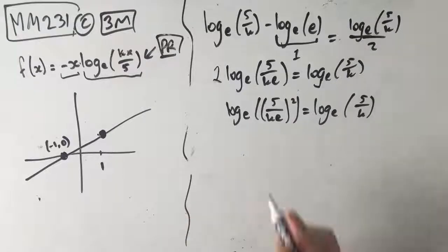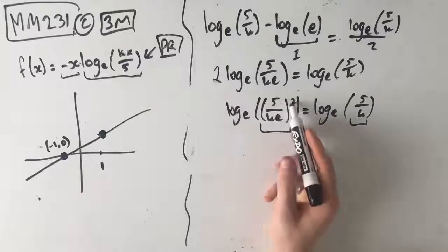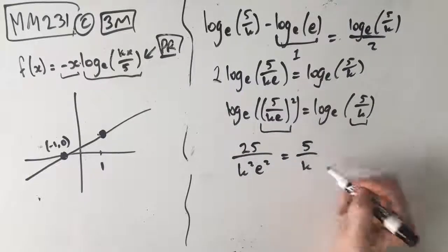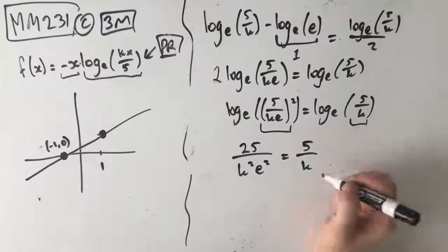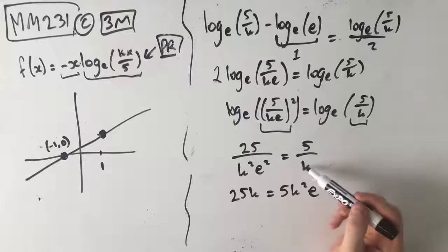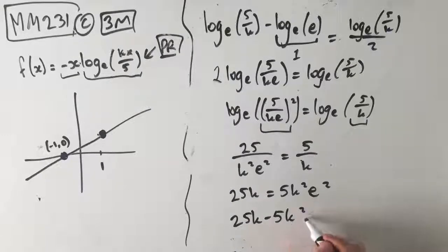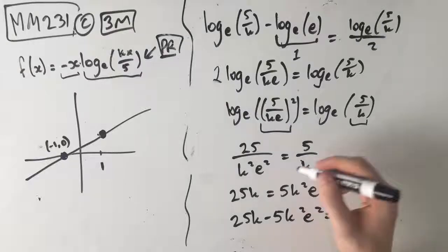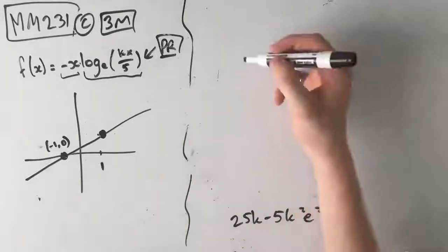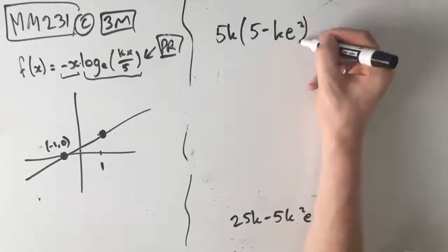Since we've got a log on both sides, the insides must be equal: 25 over k squared e squared equals 5 on k. Multiplying out gives 25k equals 5k squared e squared, so 25k minus 5k squared e squared equals 0. This is your second mark. Taking out common factors gives 5k times 5 minus ke squared equals 0.